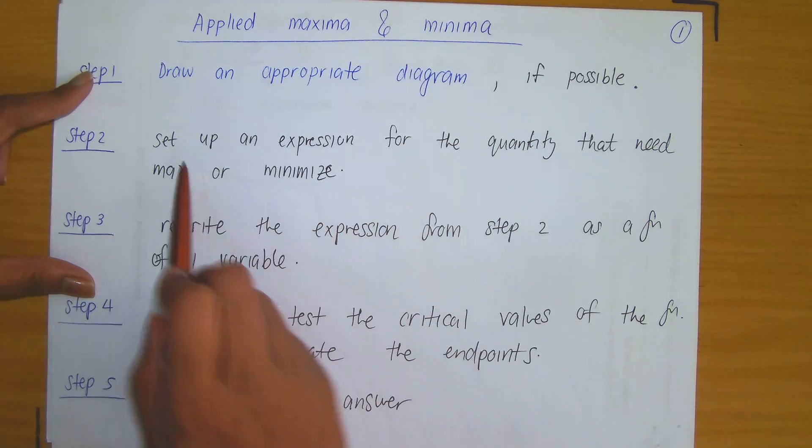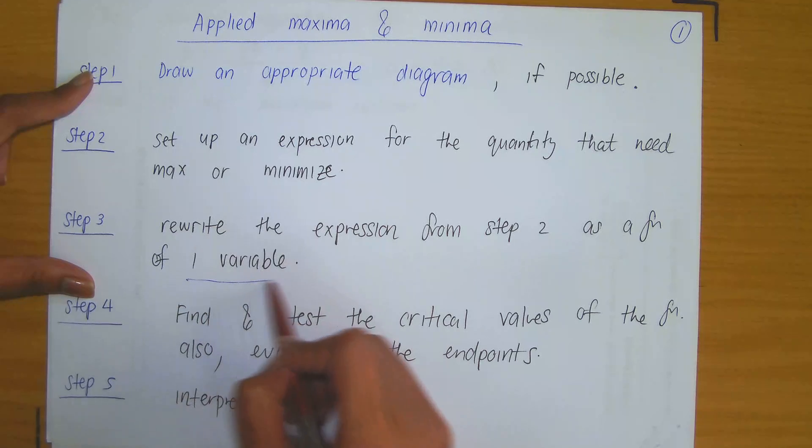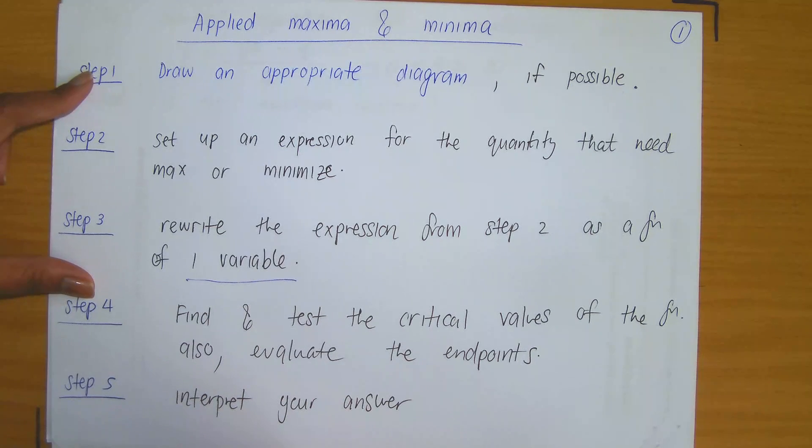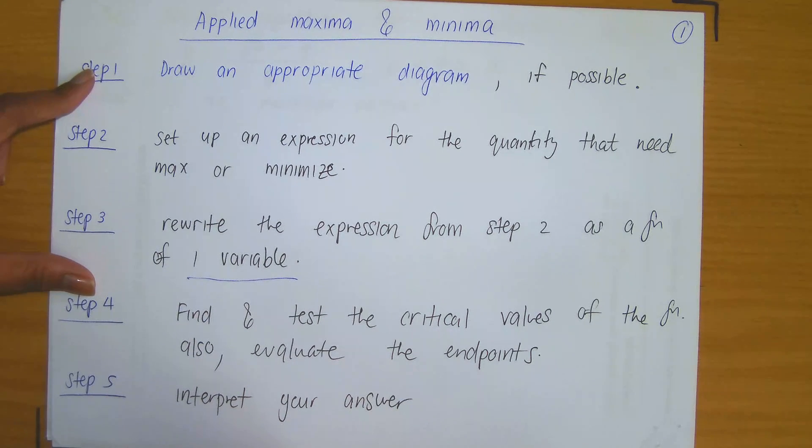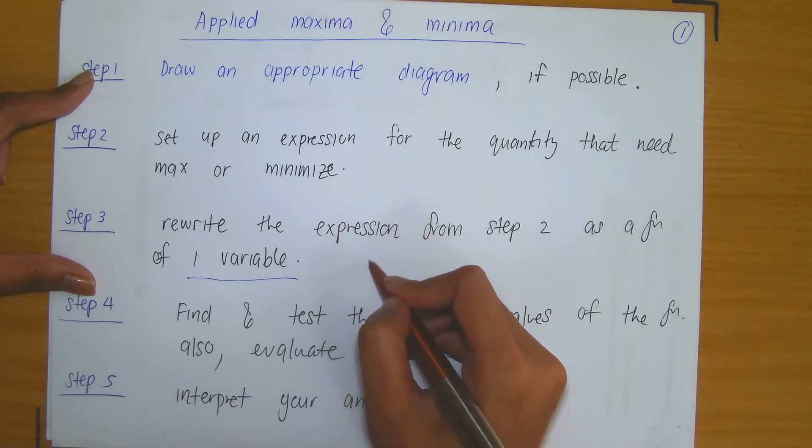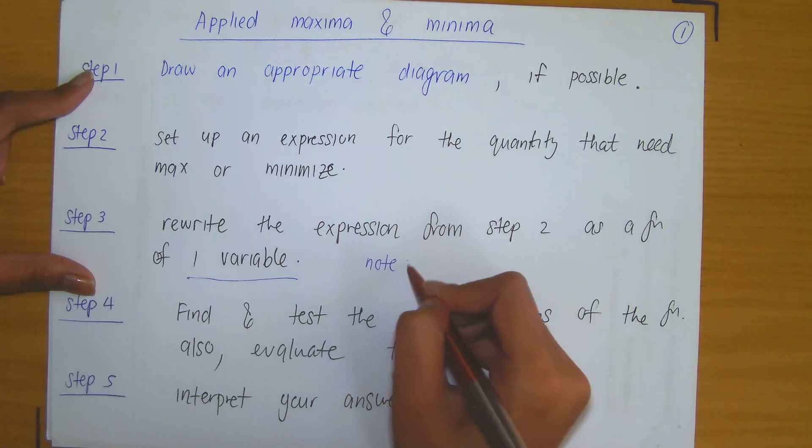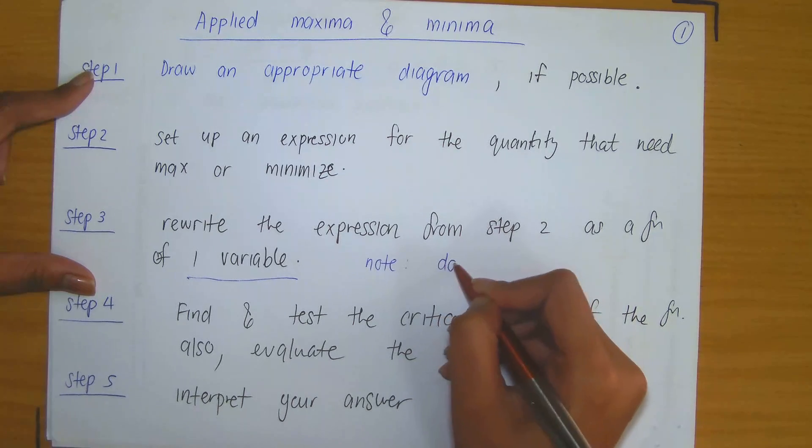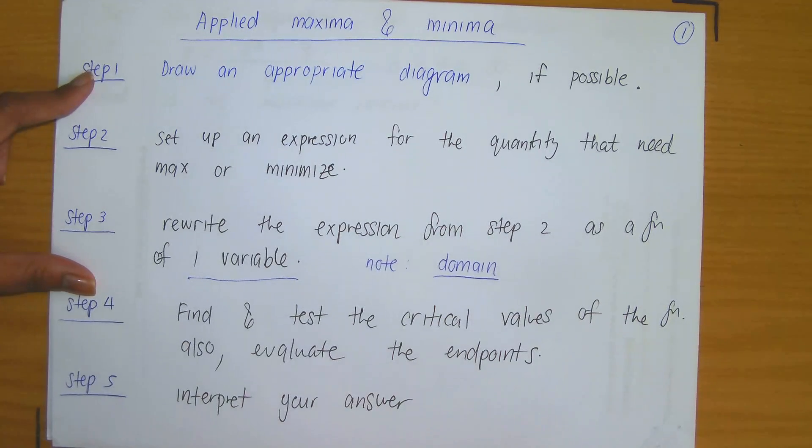Step three, rewrite the expression from step two as a function of one variable. Now, this is necessary because all of the tools we've learned in calculus is based on the function being a function of one variable. And also ensure that you make a note of what the domain of the function is.